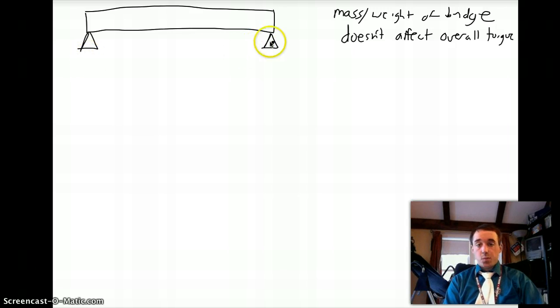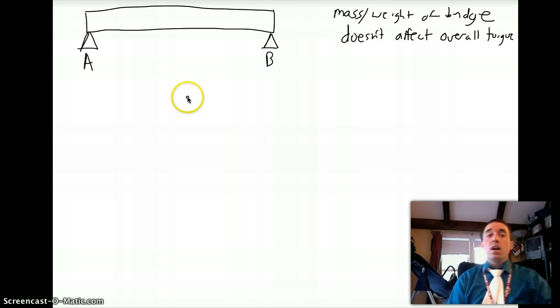So we're going to label these two supports. These are my pivot points. If I remove this one, obviously the bridge would rotate clockwise. If I remove this one, the bridge would rotate counterclockwise. So they're both providing that support that the bridge needs. I'm going to call this support A, support B.